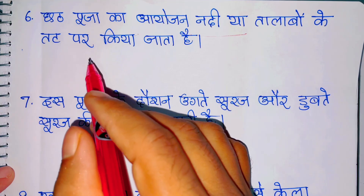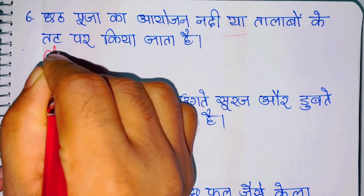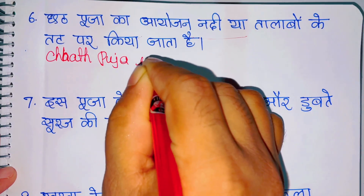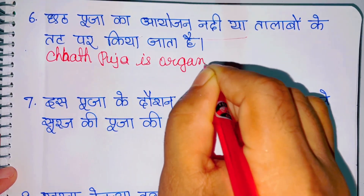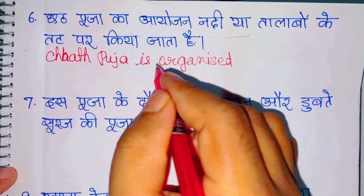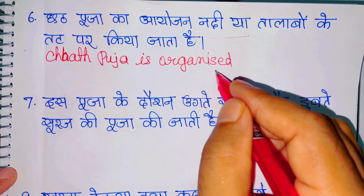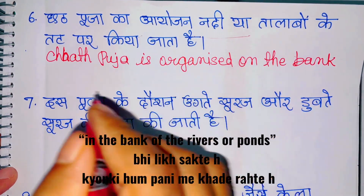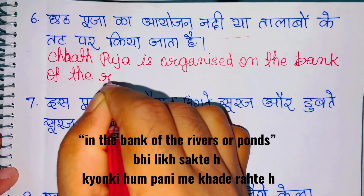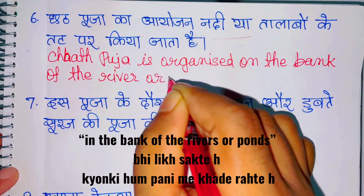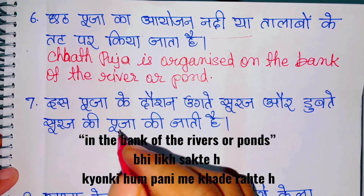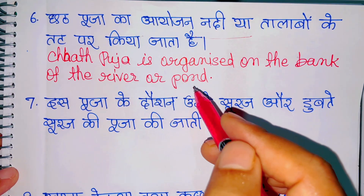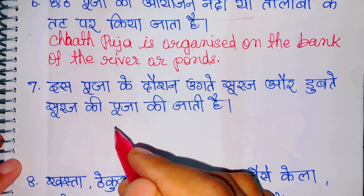छट पूजा का आयोजन नदी या तालाबों के तट पर किया जाता है। Chhat Puja is organized on the banks of rivers or ponds. इस पूजा के दवरान उगते सूरज और डुपते सूरज की पूजा की जाती है।